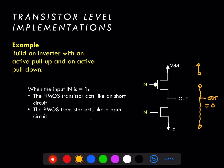So once again we've built an inverter. When the input is zero the output is one, and when the input is one the output is zero. The advantage of CMOS — combining PMOS and NMOS together to make an inverter or any other digital logic gate — is that at steady state when there are no changes in the input voltage, there's also no current being drawn at the output, leading to huge power savings compared to other approaches.